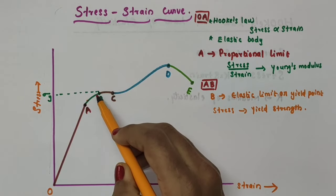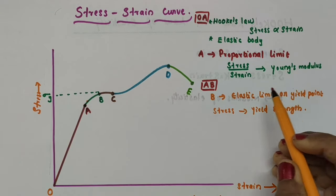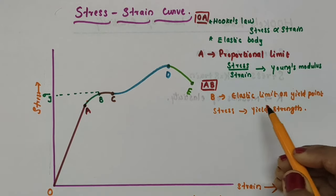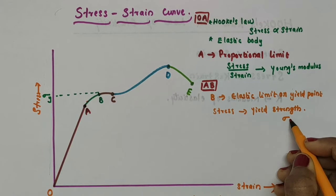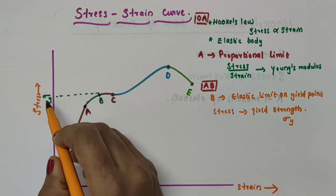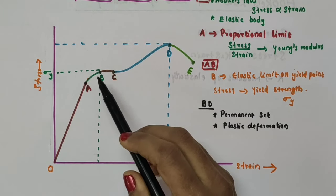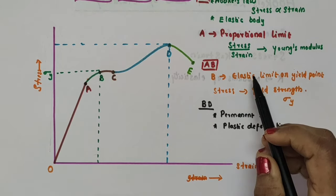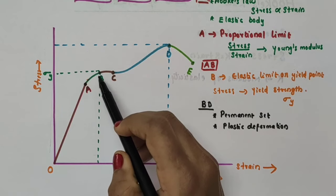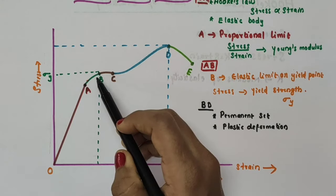Point B is known as the elastic limit or yield point. The corresponding stress is called the yield strength, represented by σy. The stress corresponding to this point is the yield strength σy. Point B is called the elastic limit because it is the point on the curve up to which the material can return to its original dimension when the load is removed.